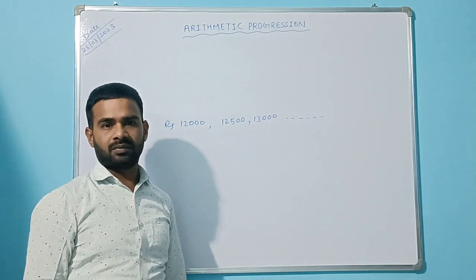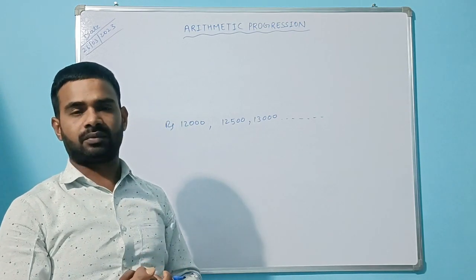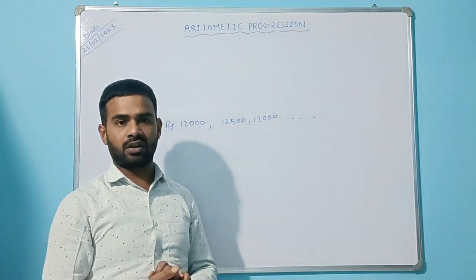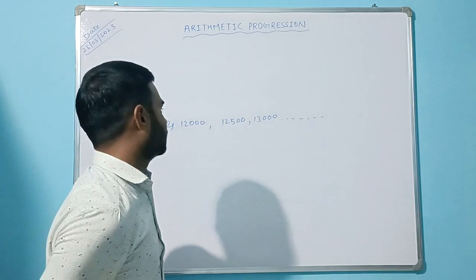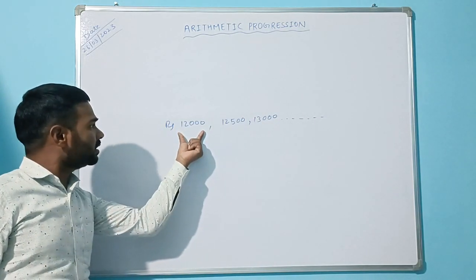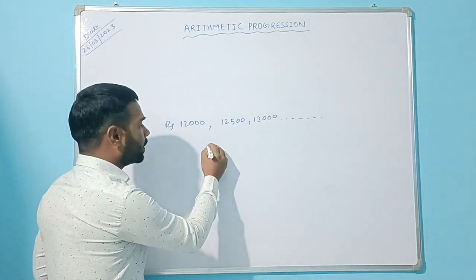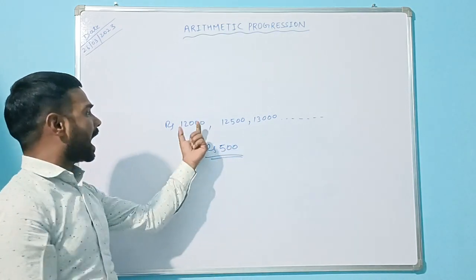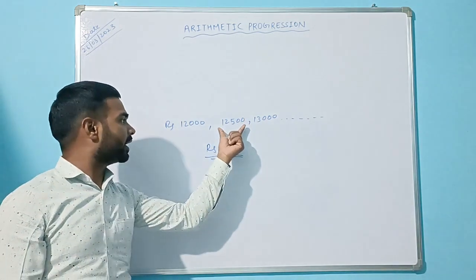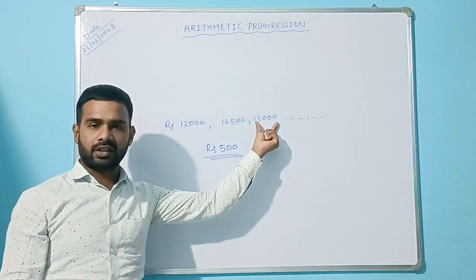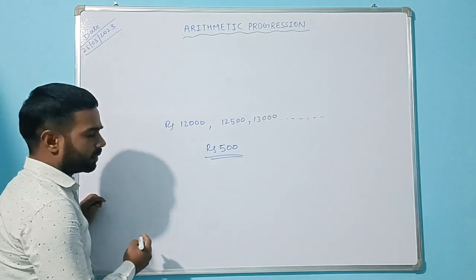Arithmetic Progression is a list of numbers — a series of numbers — where a particular number is added to the previous term to obtain the next term. That particular number here is rupees 500, which is added to the previous term to obtain the next term. Similarly, we add rupees 500 again to get 13,000.